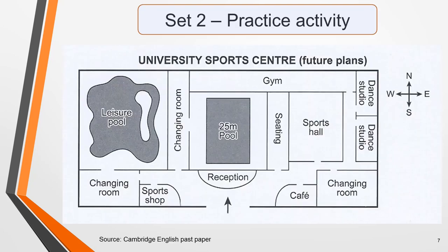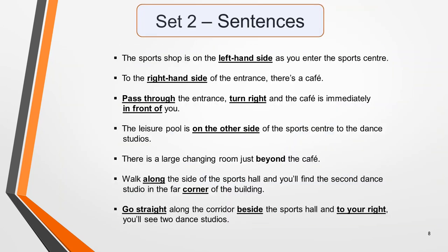Now for the sentences with the vocabulary used in context. I've put them on the next slide for you to study if you want to. The sports shop is on the left-hand side as you enter the sports centre. To the right-hand side of the entrance, there's a cafe. Pass through the entrance, turn right and the cafe is immediately in front of you. The leisure centre is on the other side of the sports centre to the dance studios. There is a large changing room just beyond the cafe. Walk along the side of the sports hall and you'll find the second dance studio in the far corner of the building. Go straight along the corridor beside the sports hall and to your right you'll see two dance studios. Pause if you need to.